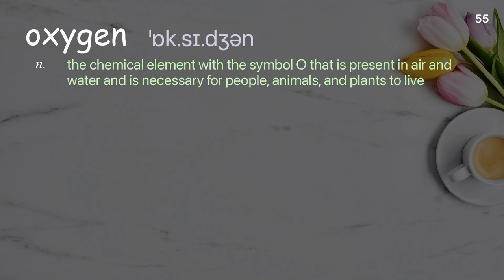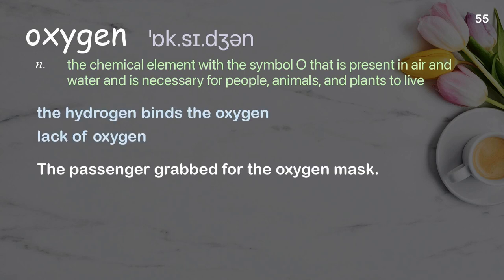Oxygen: The chemical element with the symbol O that is present in air and water and is necessary for people, animals, and plants to live. Examples: the hydrogen binds the oxygen, lack of oxygen. The passenger grabbed for the oxygen mask.